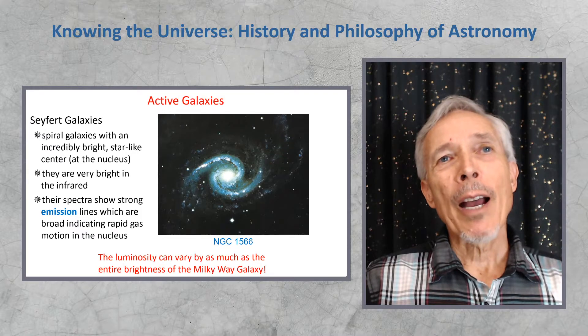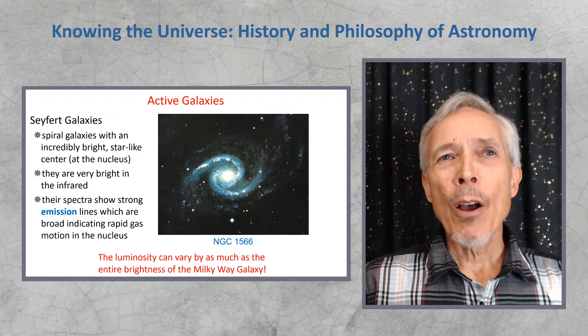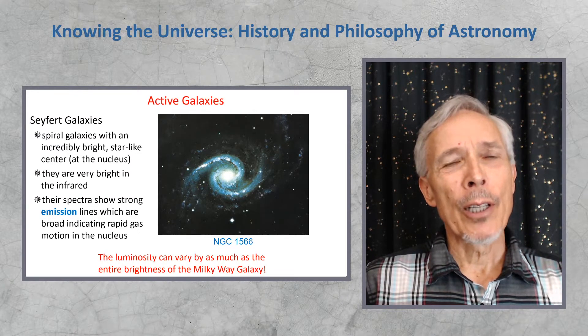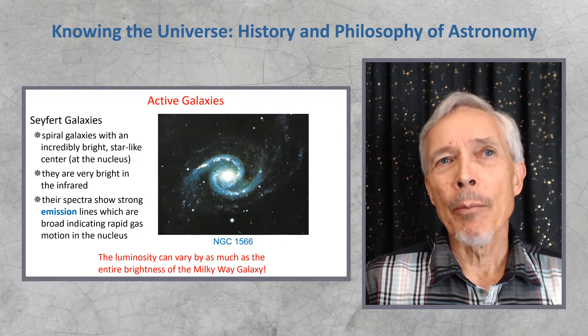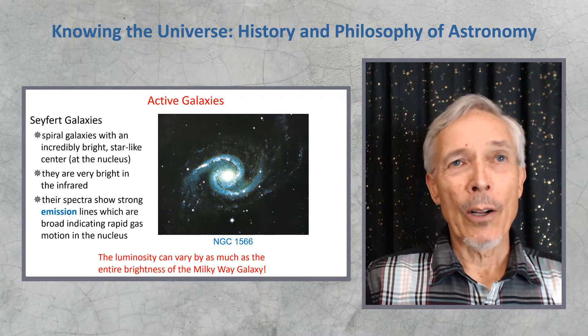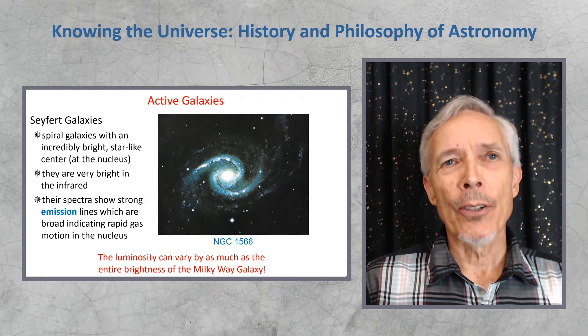But going back 50 or 60 years to the work of Carl Seifert in the 1940s and 50s, it was known that a set of galaxies out there in space have incredibly bright nuclei, far beyond the brightness we would expect from the set of stars that might be at their centers. So these Seifert galaxies, as they were called then, are spiral galaxies with a very bright star-like center nucleus.